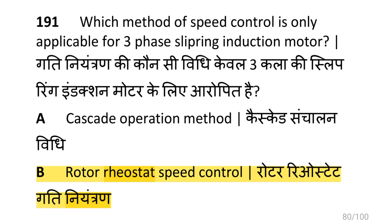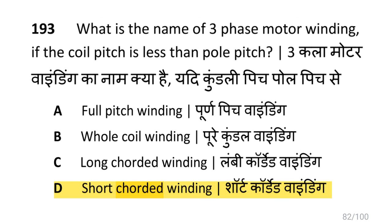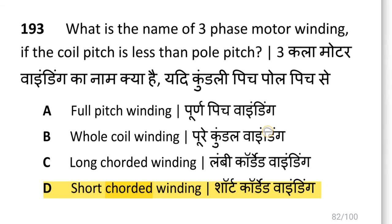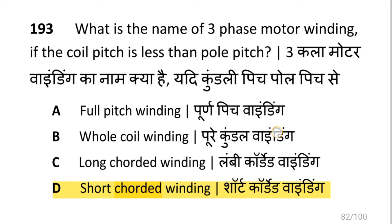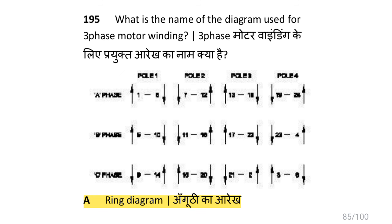The speed control method applicable only for a three phase slip ring induction motor is rotor rheostat speed control. The winding name illustrated is skew winding. The three phase motor winding where the coil pitch is less than the pole pitch is short corded winding. A demerit of three phase concentric winding is that a step former is required. The diagram used for three phase motor winding is a ring diagram.